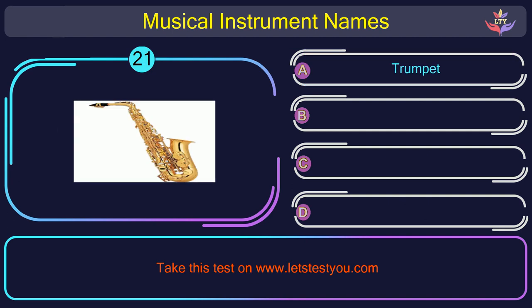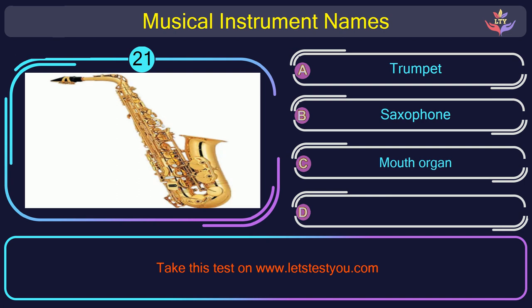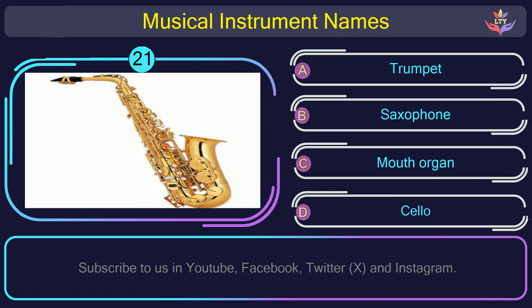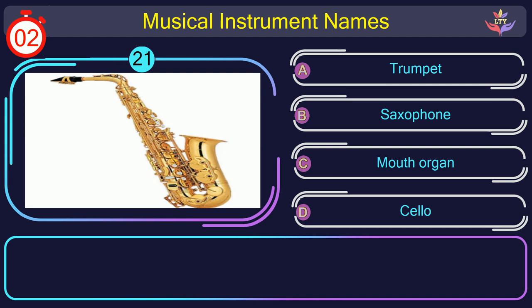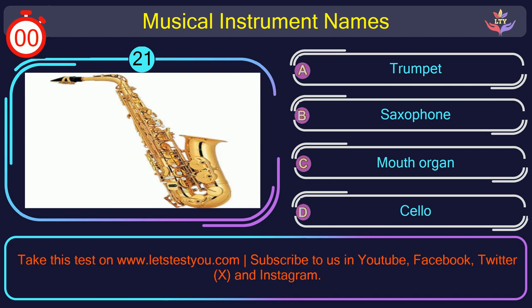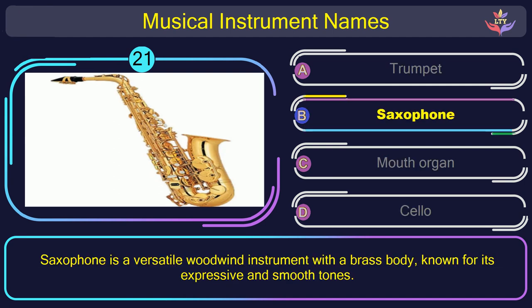Question number 21. What is the name of the musical instrument in this picture? The correct answer is option B: Saxophone. Saxophone is a versatile woodwind instrument with a brass body, known for its expressive and smooth tones.